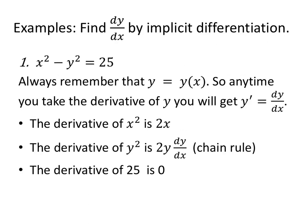Let's find dy/dx by implicit differentiation for x squared minus y squared equals 25. Always remember that y is a function of x, so we're using the chain rule. y is on the outside, x is on the inside. Anytime you take the derivative of y, you're going to end up with a y prime — that's the derivative of the inside.